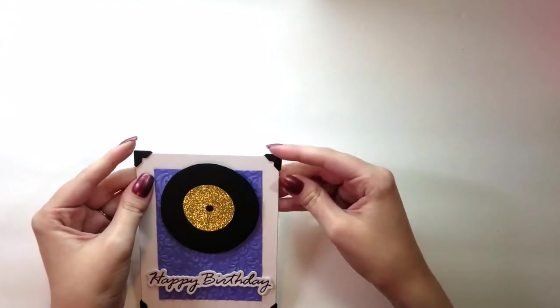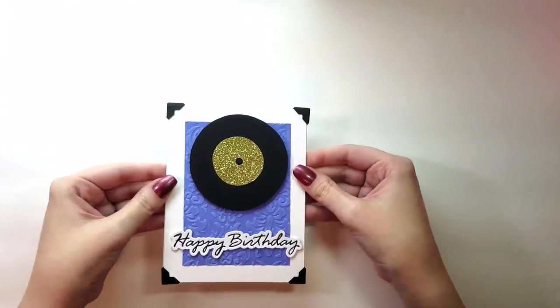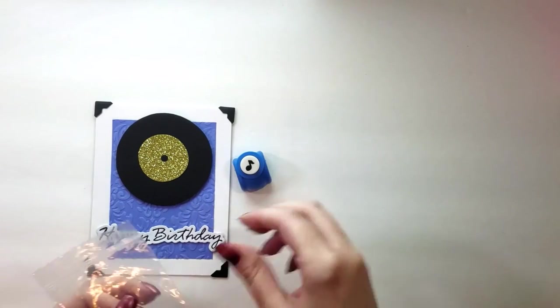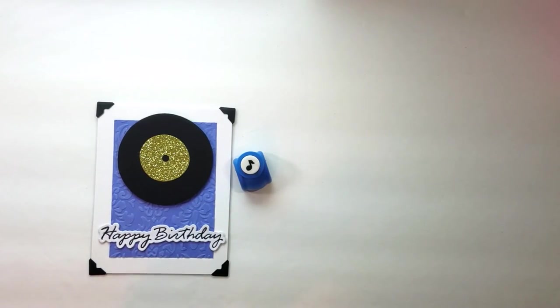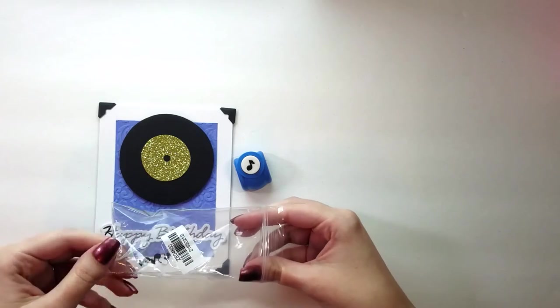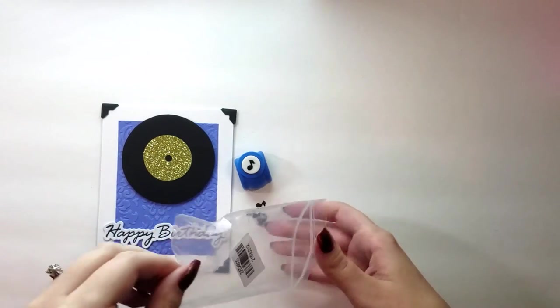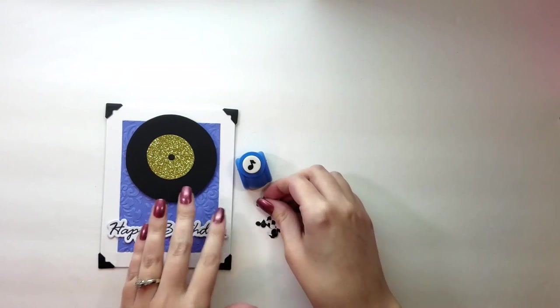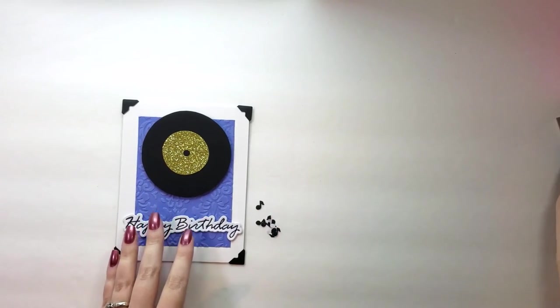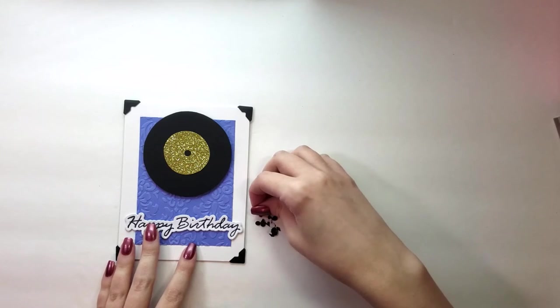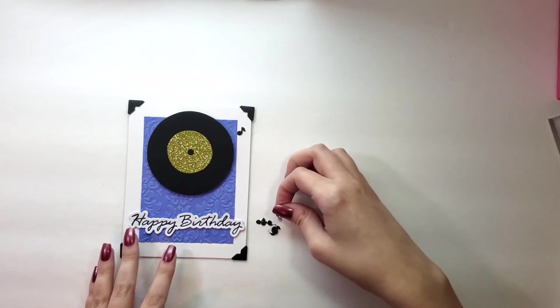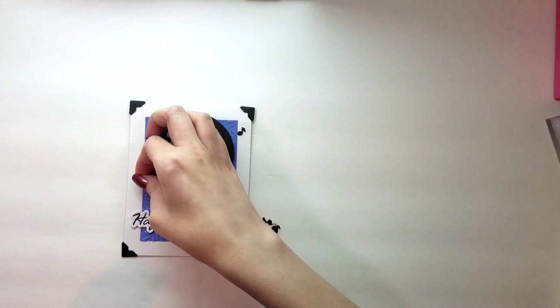I'm going to be using a small punch, and it's a music note punch. I've already punched some little black music notes out of cardstock, and I'm going to just glue those intermittently all over the front of the card, again with my glue pen. And I think that adds a little bit of a nice background, and it helps it not be so plain. It also kind of gives you more of the idea that that is a record, in case there's any confusion.